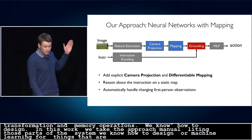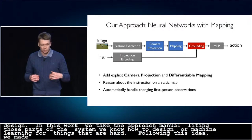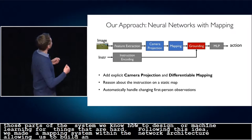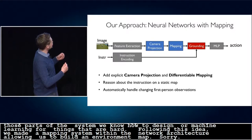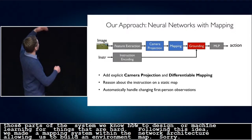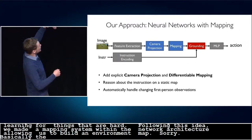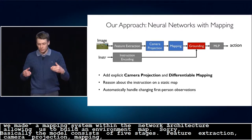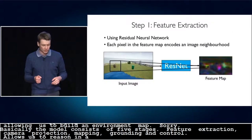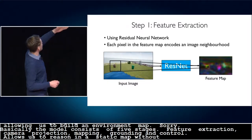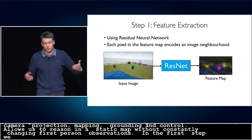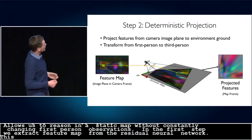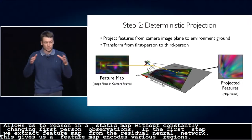Following this idea, we embed a mapping system within the neural network architecture. This allows us to build an environment map. Yeah, basically the model consists of five stages: Feature extraction, camera projection, mapping, grounding, and control. And it allows us to reason in the static map without worrying about the constantly changing first-person observations. So in the first step, we extract feature map from the input image using a residual neural network. This gives us a feature map that encodes information about various image regions. This feature map is observed from a different viewpoint at every time step.